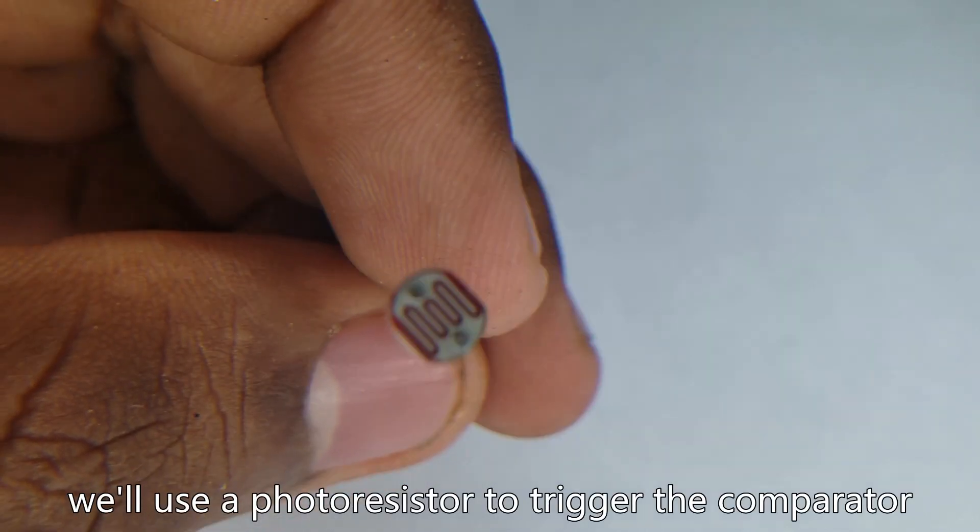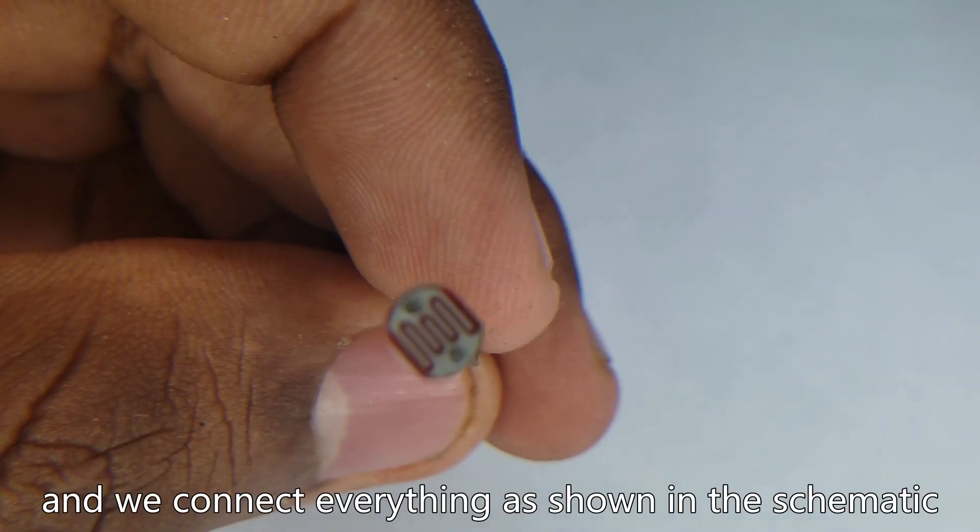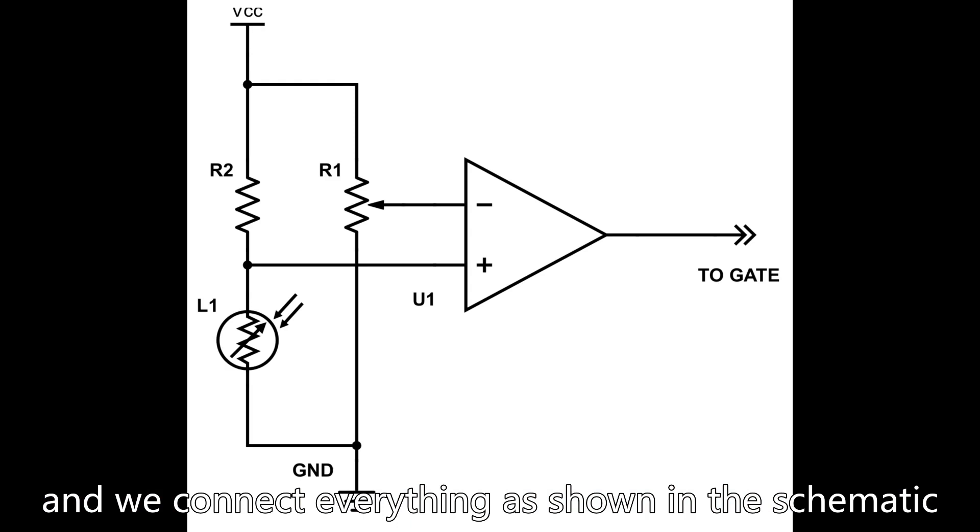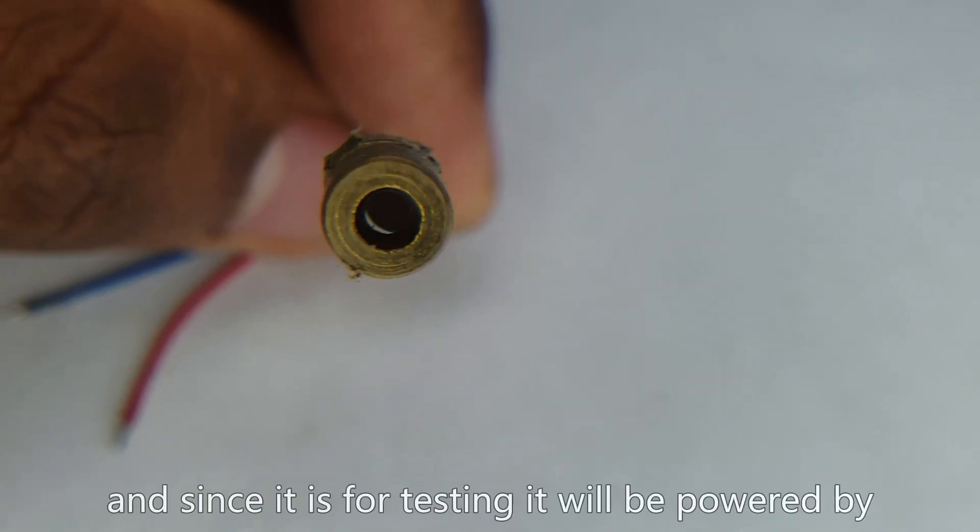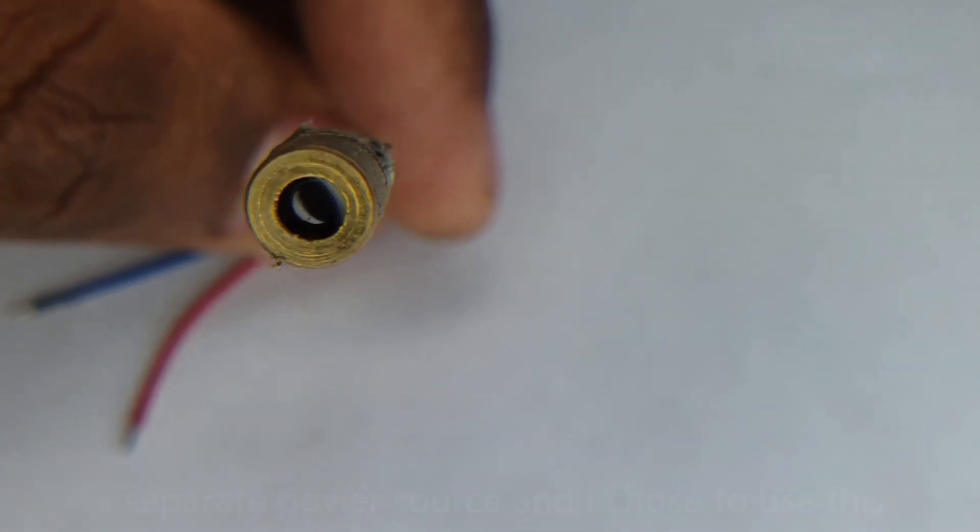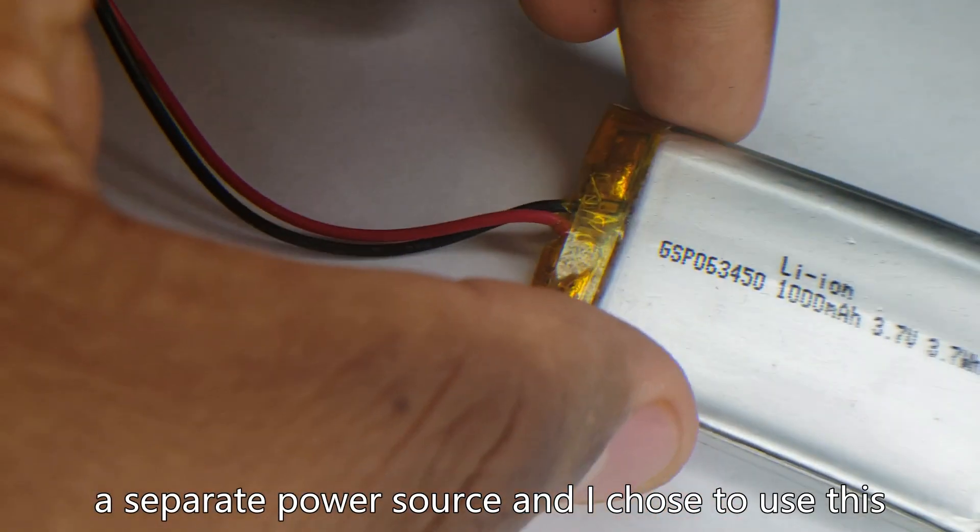We'll use a photoresistor to trigger the comparator and we connect everything as shown on the schematic. The laser that I used is a generic one and since this is for testing it will be powered by a separate power source and I chose to use this lithium ion battery.